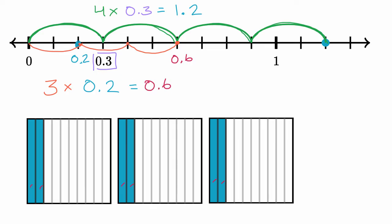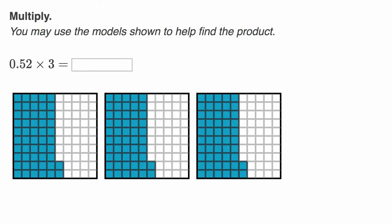Let's do one more example that gets a little bit more involved. So here we're told to multiply. It says you may use the model shown to help find the product. This is a screenshot from the exercise on Khan Academy. Pause this video and see if you can figure out what this is.